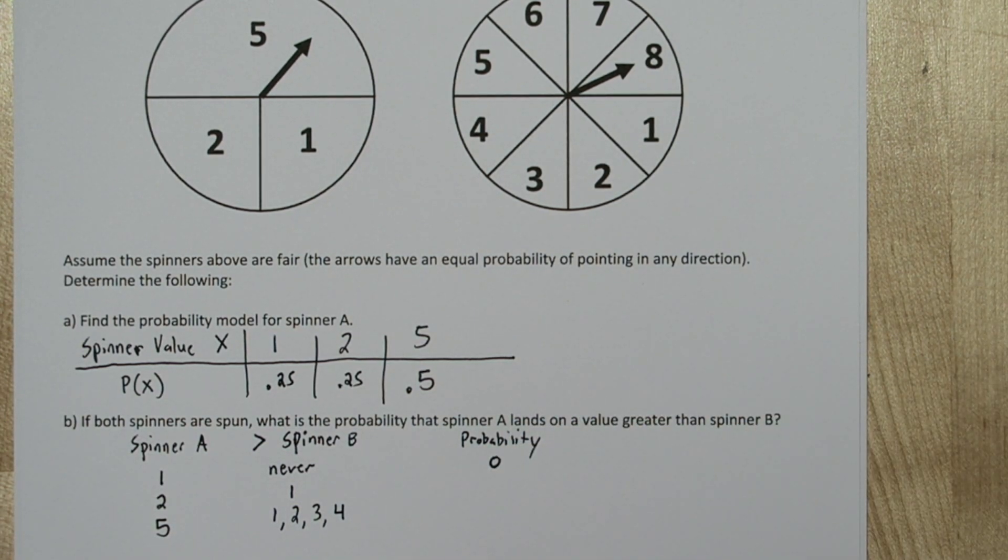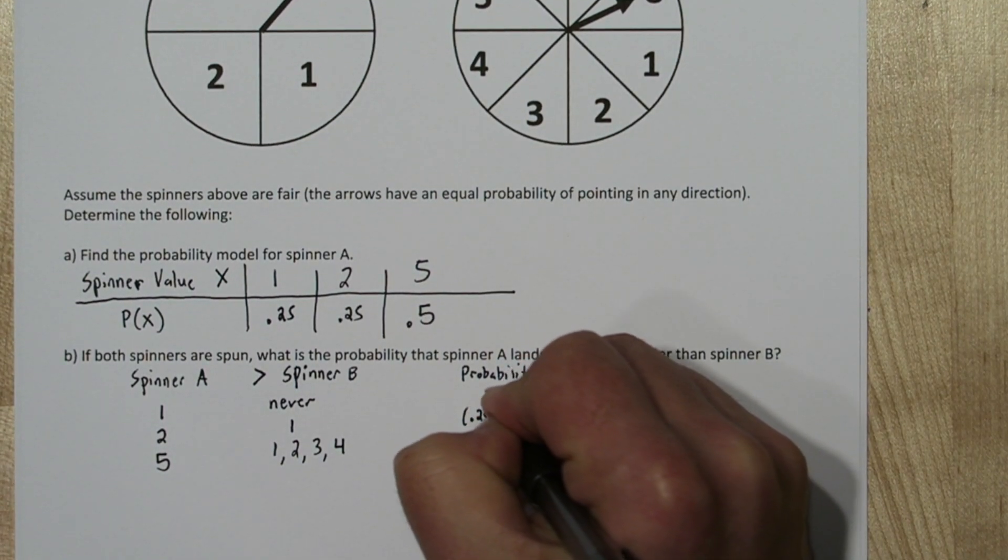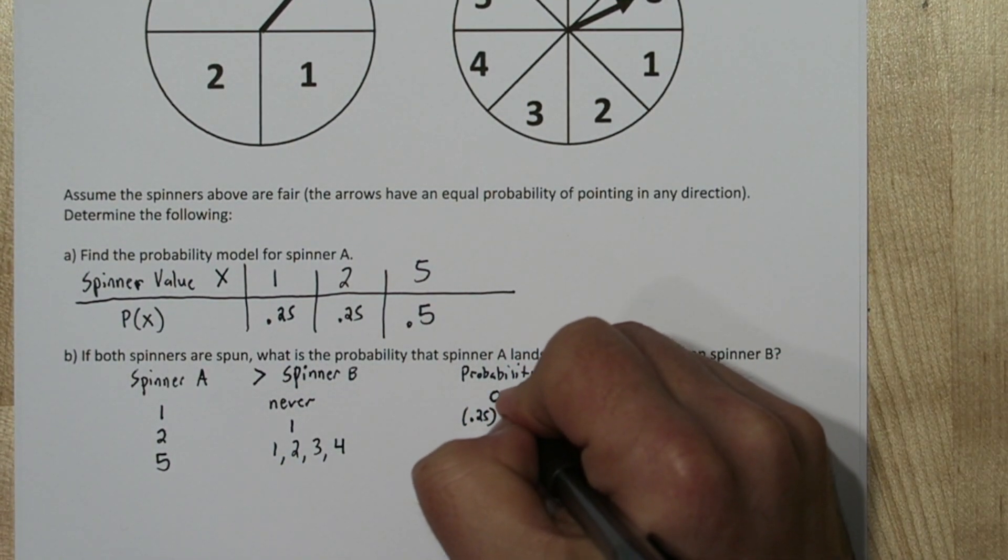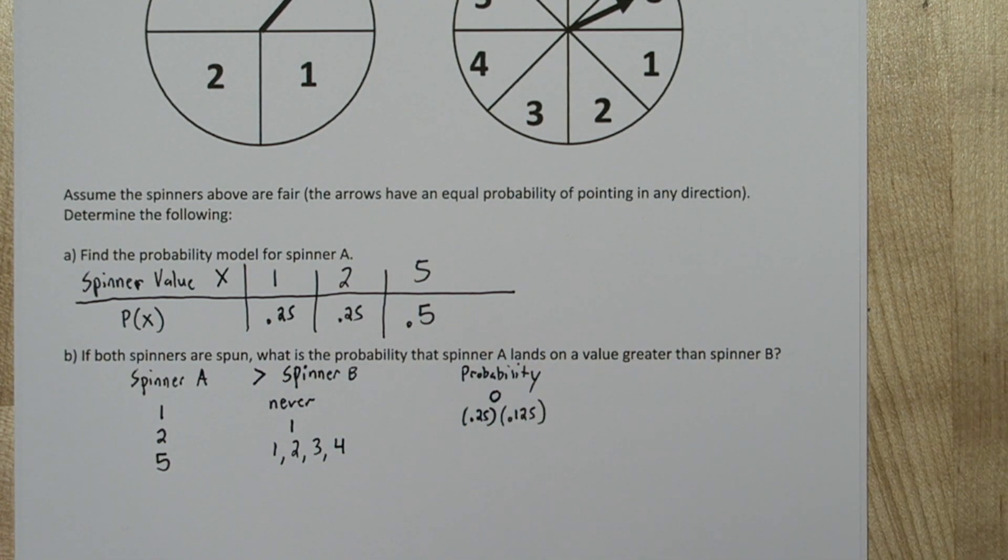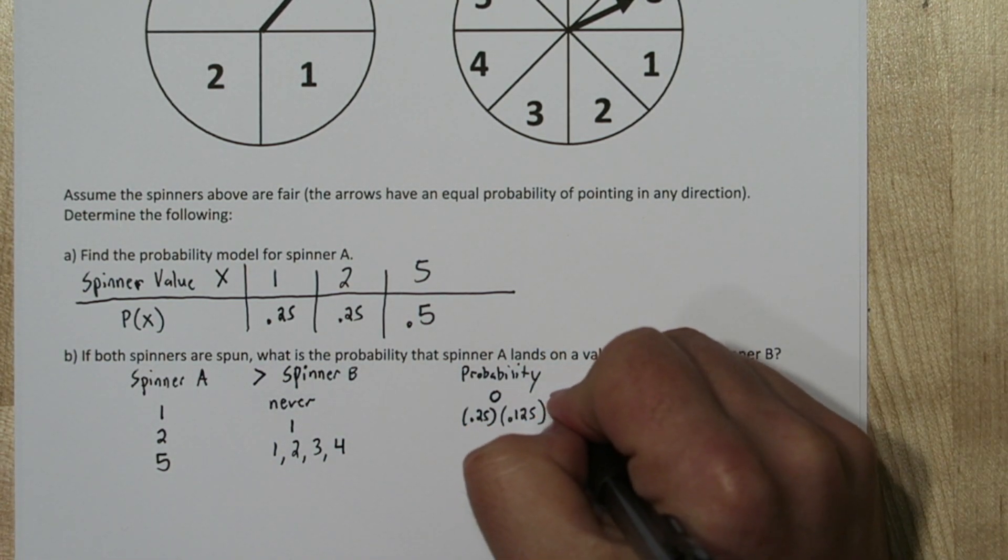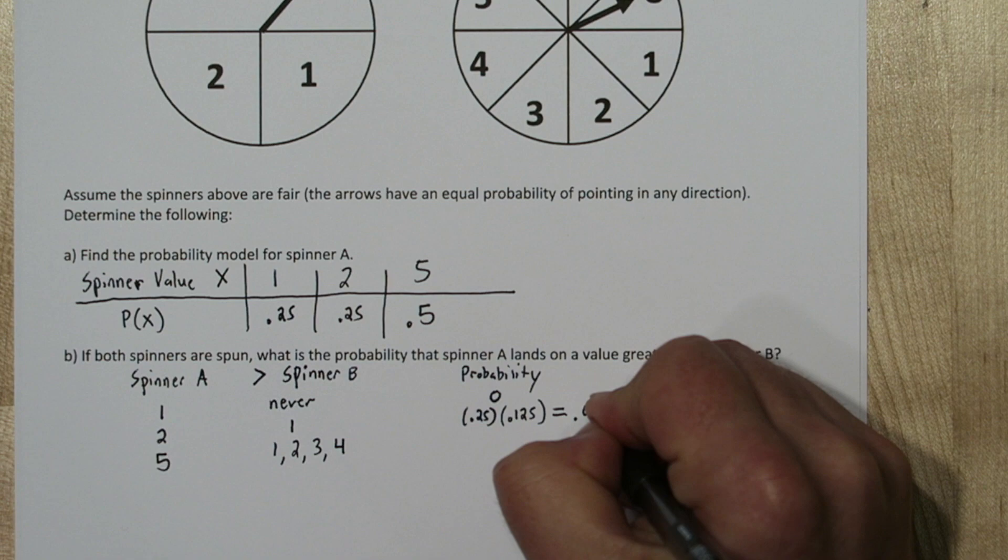Now if spinner A lands on the number 2, and spinner B lands on the number 1, then spinner A would be greater than spinner B. So we need to determine what that probability is. Since spinner A and spinner B are independent, the probability that spinner A lands on the number 2 is 0.25, and the probability that spinner B lands on the number 1 is 1/8, or 0.125. So the probability of these two independent events happening is just their product.